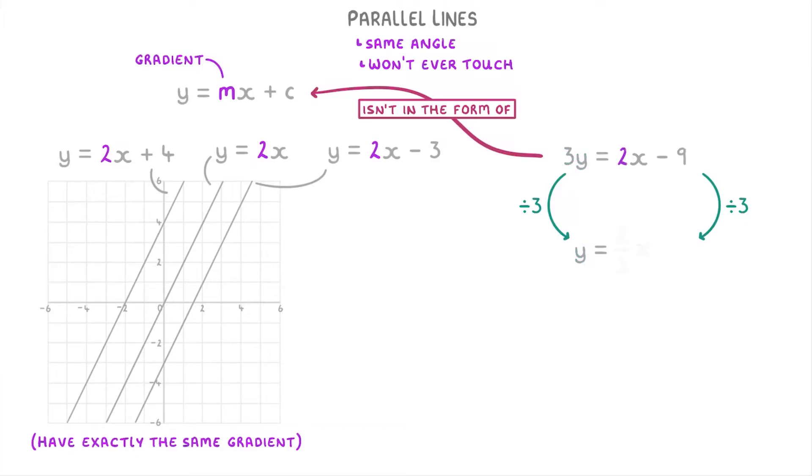And that would give us y equals 2 thirds of x minus 3. So the gradient of this line is actually 2 thirds, not 2.